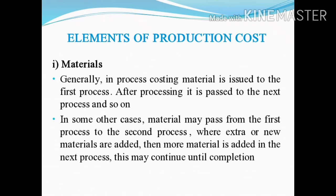What are the elements of production cost? The first one is materials. Generally, in process costing, material is issued to the first process. After processing, it is passed to the next process. Generally, the finished product of that process will be transferred to the next process and so on until the production is completed.